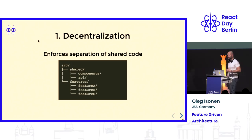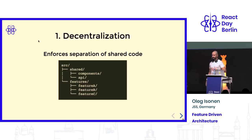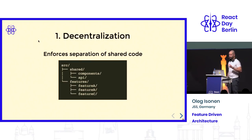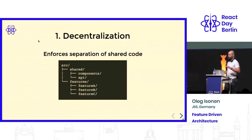At some point you will want shared code — something you can use in different features. The benefit is that you will be forced to be explicit about it. You will have to take this functionality and put it in some shared directory, and it will be obvious that this is used between many places.